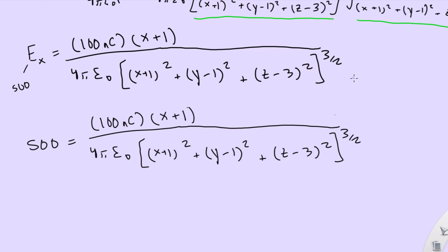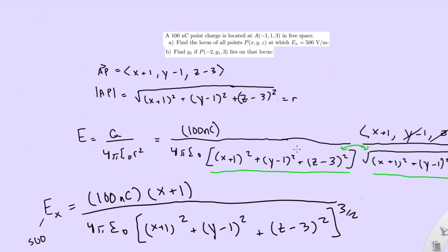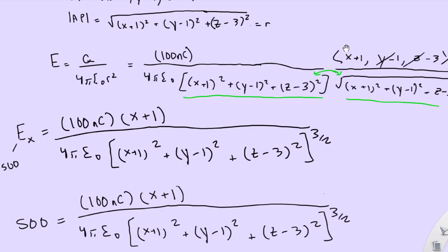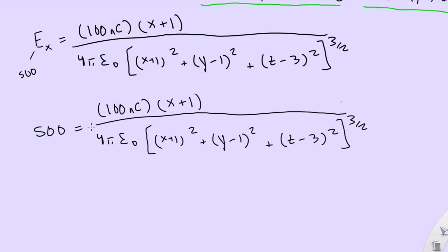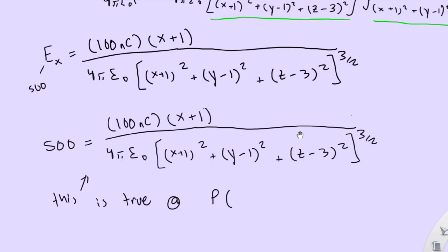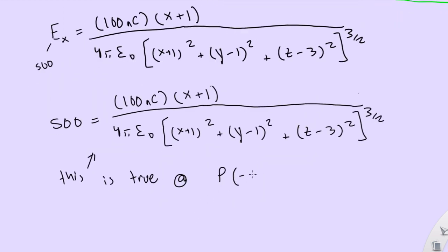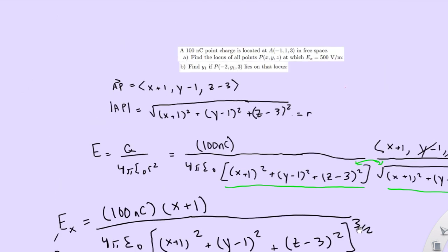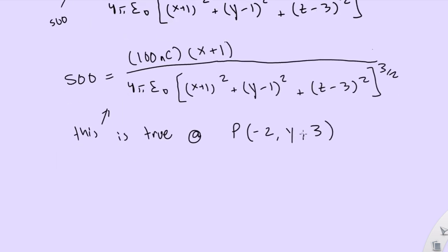So the next question of part B follows up with that. And it says, find Y1 if P at negative 2, Y1, and 3 lies on that locus. So we know that this equation will be true. This is true at P of—now I gotta remember my point again. What is it? Negative 2, Y, and 3. And what does it want again? It wants us to find Y. Y1.